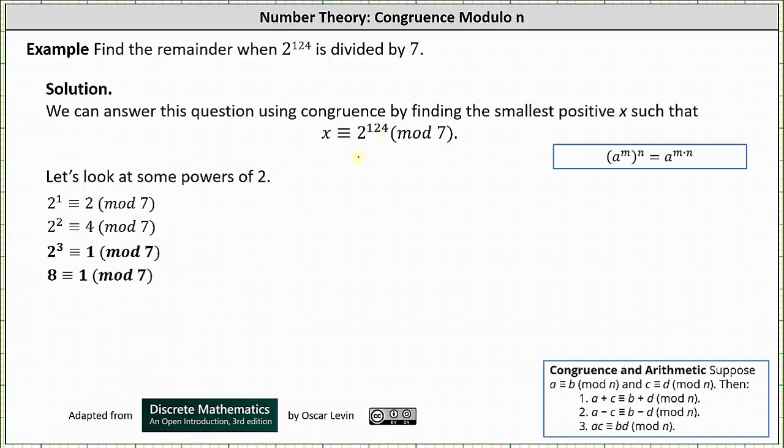To do this, we'll use the exponent property a to the power of m to the power of n equals a to the power of m times n, where m equals 3. To help us do this, we need to determine how many threes are in 124. Let's divide 124 by 3.